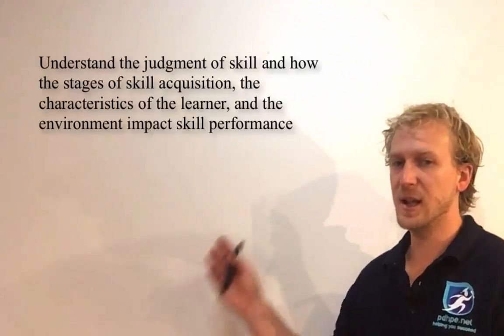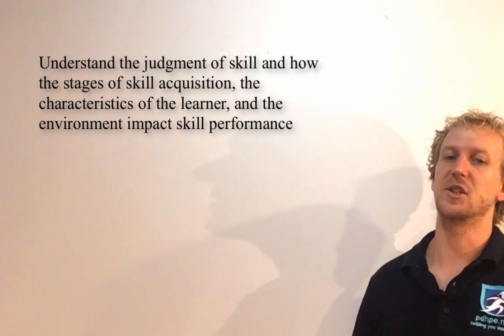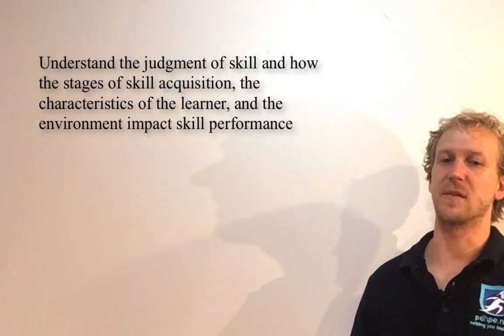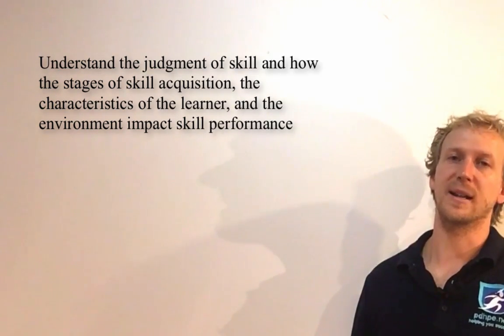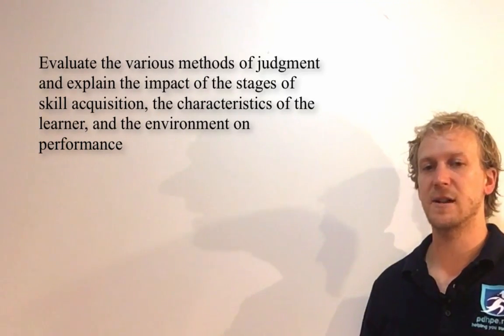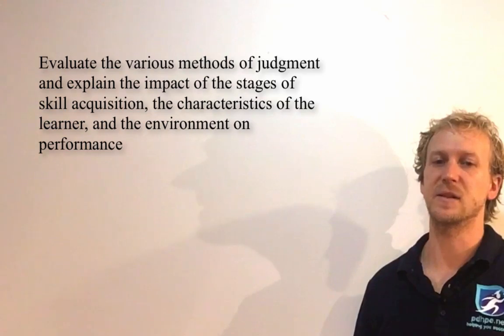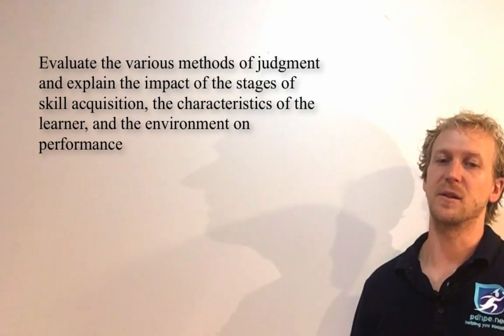This dot point is the learning environment. We're going to continue with our major learning goal for this critical question: to understand the judgment of skill and how the stages of skill acquisition, the characteristics of the learner, and the environment impact skill performance. Our success criteria is to evaluate the various methods of judgment and explain the impact of the stages of skill acquisition, the characteristics of the learner, and the environment on performance.